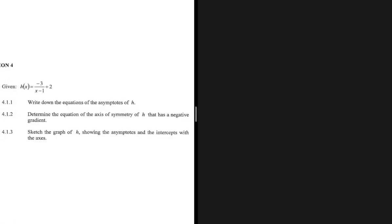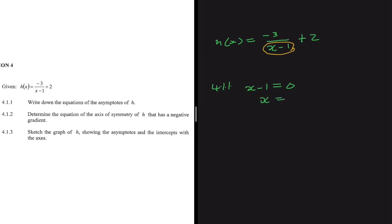Write down the equations of the asymptotes of h, where h(x) = -3/(x-1) + 2. We know we cannot divide by zero. In the equation, we have -3 divided by (x-1), so for 4.1.1, if x - 1 = 0, we solve for x to find our vertical asymptote. Since we can never divide by zero, solving gives us x = 1, so the vertical asymptote is x = 1.